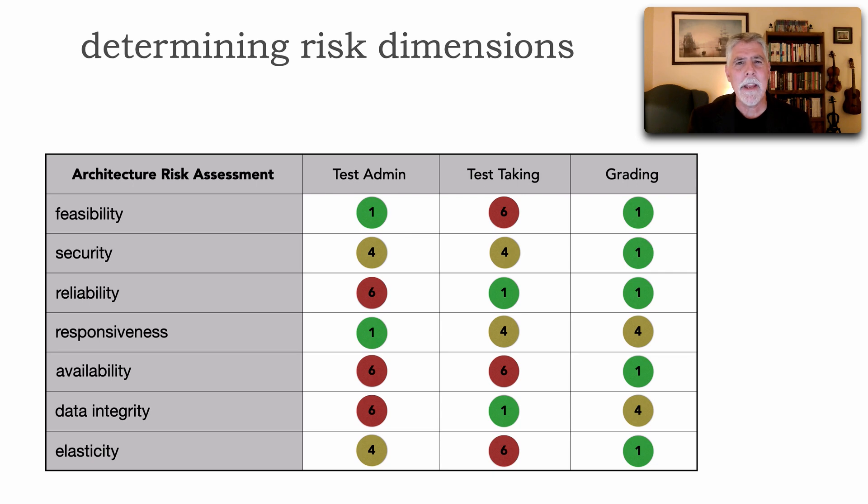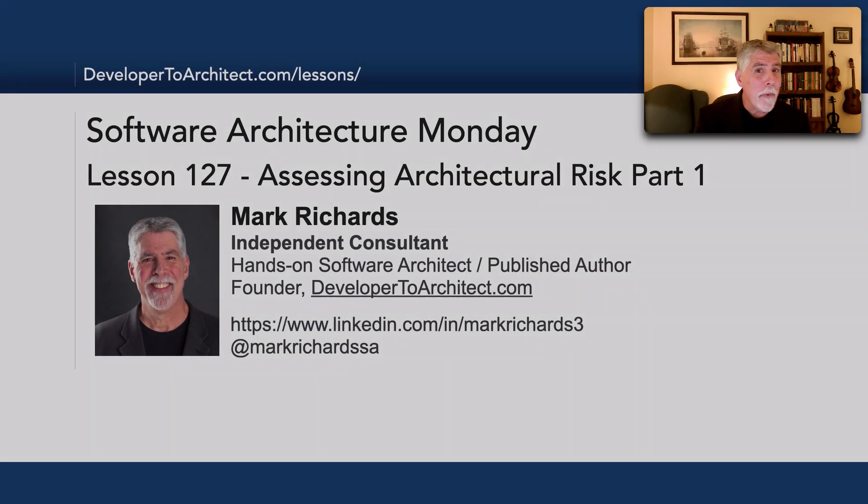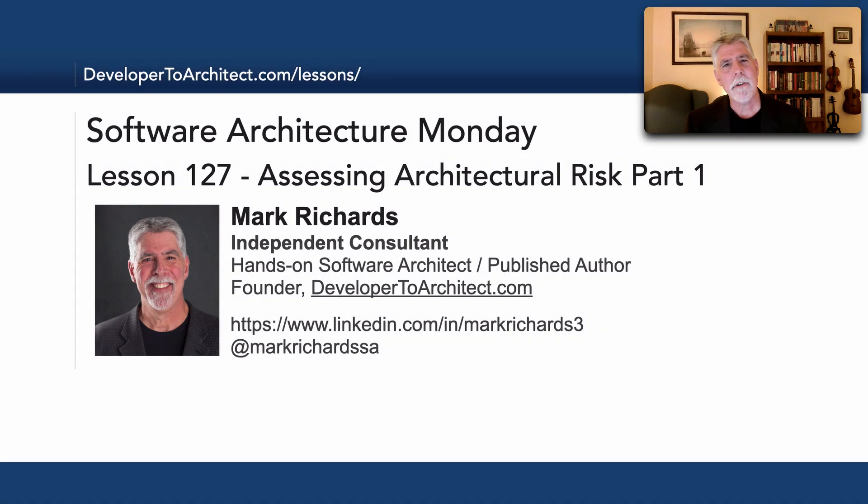Now in this lesson, part one here, I just wanted to really set the stage by introducing how to determine the risk criteria. Now this would be a great exercise after you've seen this video to start setting up this kind of grid, this kind of spreadsheet in preparation for the next lesson that we see on 128, which I'll be talking about how to identify these particular numbers and what they really mean. So this has been lesson 127, assessing architectural risk part one, which is really identifying those architectural risk categories, or I should say criteria and context.